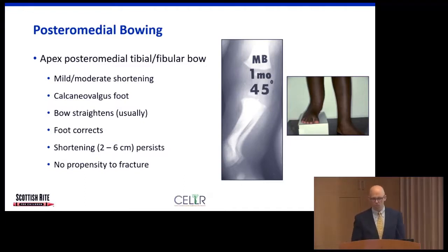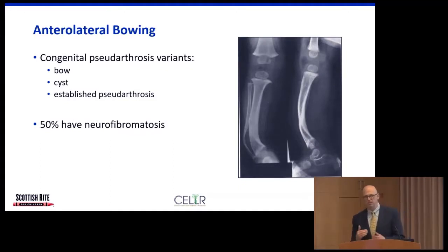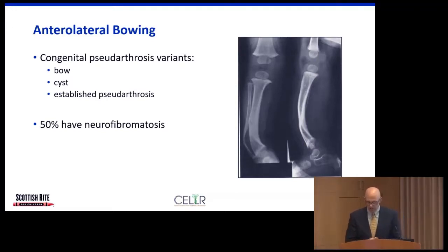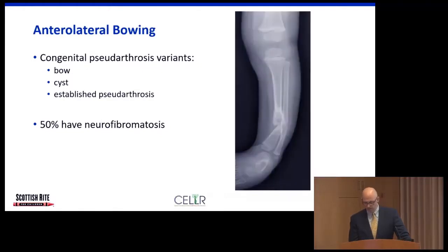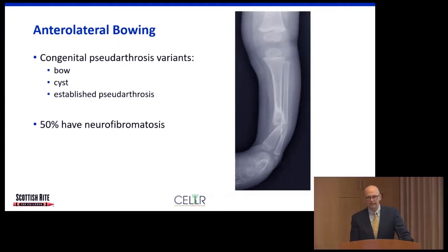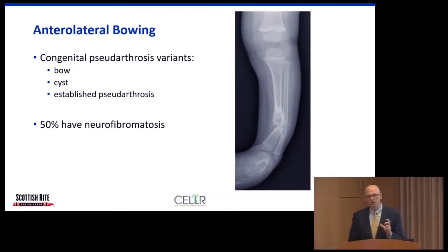Anterolateral bowing is almost the opposite — the tibia bows forward and to the outside. This is a much more concerning deformity because the bow is associated with changes in the bone, including cystic changes and potentially a congenital pseudarthrosis — a false joint where the bone has never healed. Fifty percent of these patients will have associated neurofibromatosis, which is very important to pick up, so all are sent for evaluation.